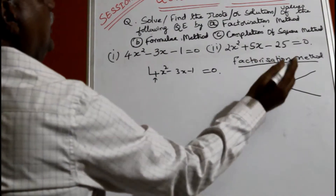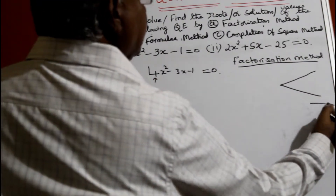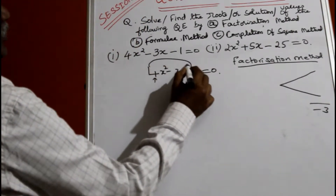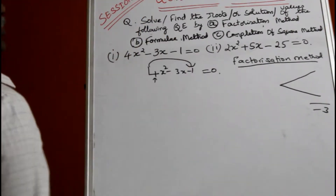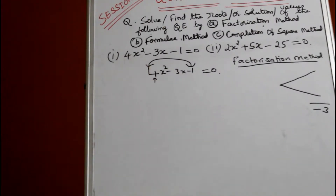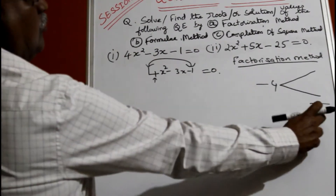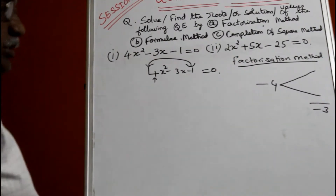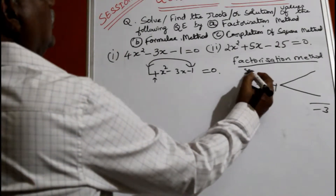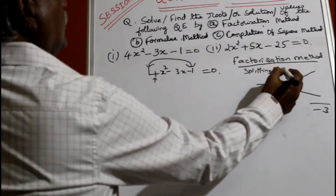You must put a V like this — this is called splitting the middle term. The middle term is actually minus three. You must multiply these two numbers: four into minus one is minus four. That's why it's called the splitting the middle term method.